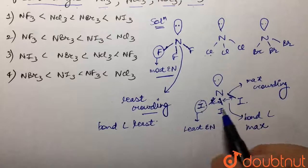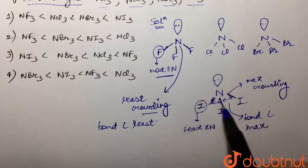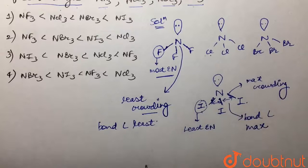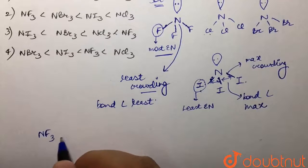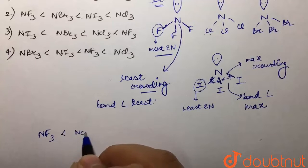So over here we can see that bond angle is increasing in this order. So what would be our order? NF3 would have the least angle, then NCl3, then NBr3, and then maximum would be of NI3.